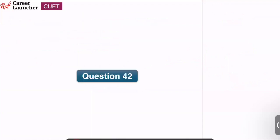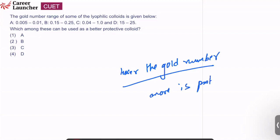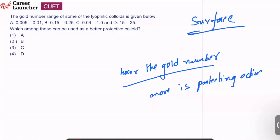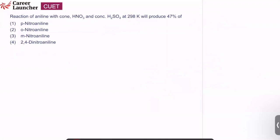Question 41 is skipped due to the reaction not being given properly. Question number 42: gold number of lyophilic colloids — which can be used as a better protective colloid? Remember: lesser the gold number, more is the protecting action. Option A has the least gold number (0.005 to 0.001), so it is the best protective colloid. Answer is option 1. Question from surface chemistry.